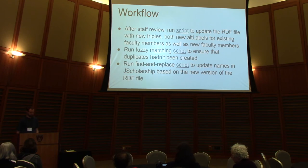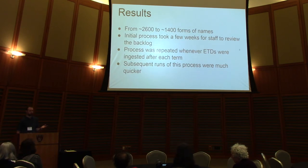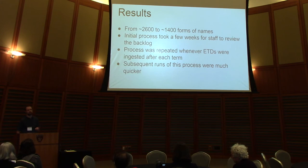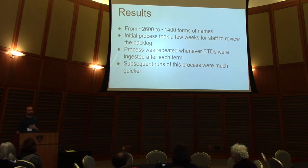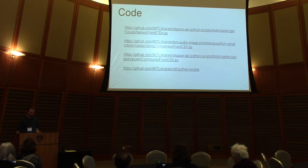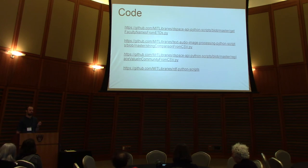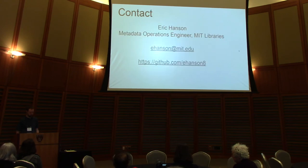Our results were good — we went from over 2,600 forms of name down to around 1,400. The initial process took a bit of time because there was a big backlog, but when the process was repeated after subsequent terms it went much more smoothly. I've got links in the slides to the code on GitHub, and on the earlier slides I had links to the exact scripts I was using. And that is all.